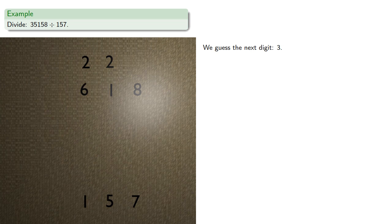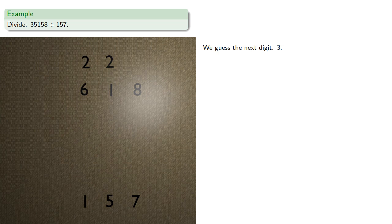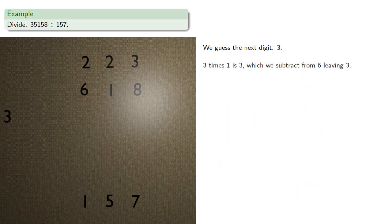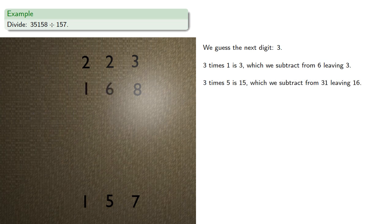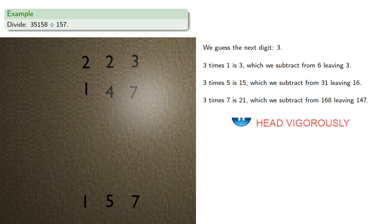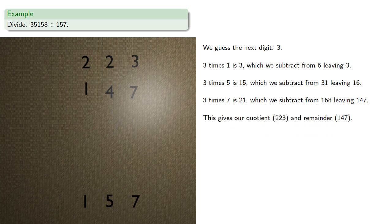Again we'll guess our next digit. Something times 1 has to be less than 6. Now on a counting board, if we guess too low we can fix that by increasing our guess slightly, so it's always best to guess a little low. We'll guess the next digit is 3. 3 times 1 is 3, which we subtract from 6, leaving 3. 3 times 5 is 15, which we subtract from 31, leaving 16. And 3 times 7 is 21, which we subtract from 168, leaving 147. This gives our quotient 223 and our remainder 147.